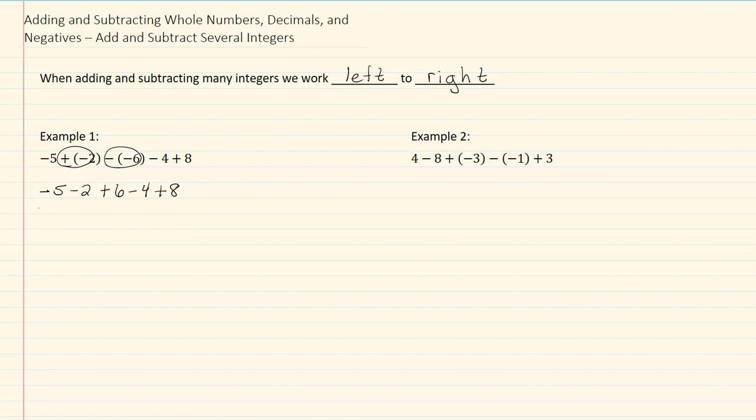Now working left to right, I'll take my first two numbers. They have the same sign, so I will add and keep my sign, giving me a negative seven. And I'll just write down all my other numbers.